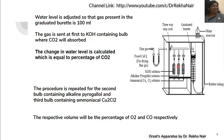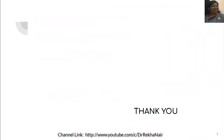From all three bulbs, by noting the change in water level readings, we can calculate the amounts of carbon dioxide, oxygen, and carbon monoxide. The unabsorbed gas is considered as nitrogen. Starting from 100 ml, whatever amounts of carbon dioxide, oxygen, and carbon monoxide have been calculated are subtracted from 100, and that gives the percentage of nitrogen present in the flue gas. Thank you, that's all for today.